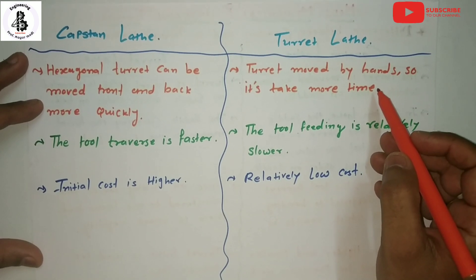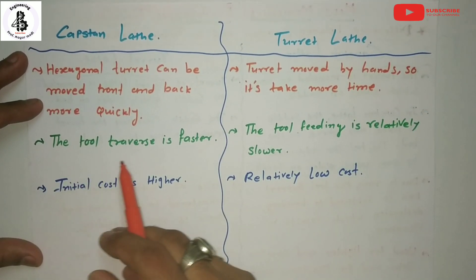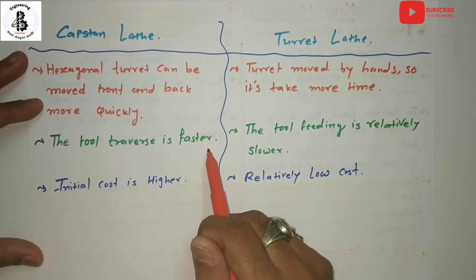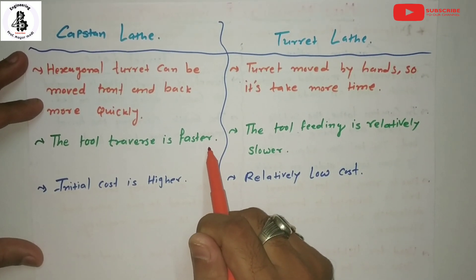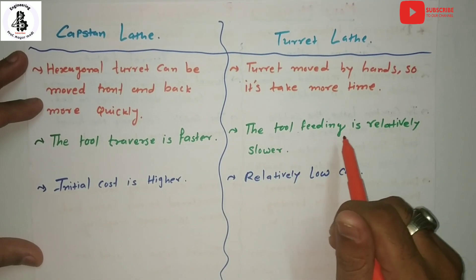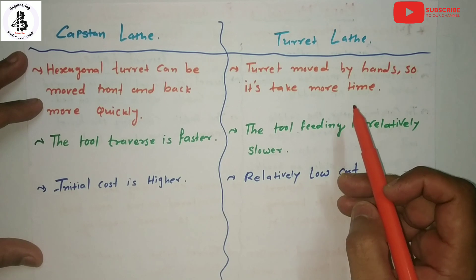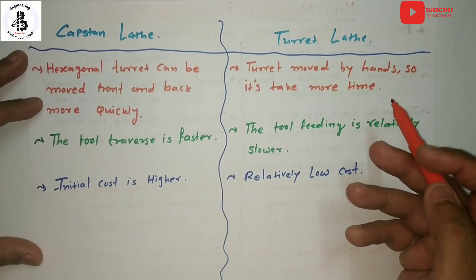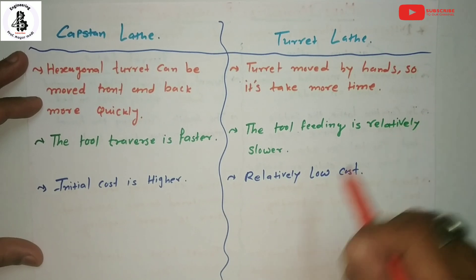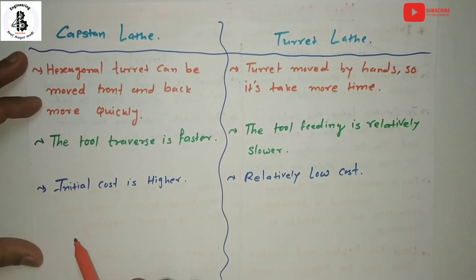For the capstan lathe, the tool traverse is faster, giving good productivity with higher accuracy. In the case of the turret lathe, tool movement is relatively slower because it is done manually by hand, which increases production time and reduces accuracy.